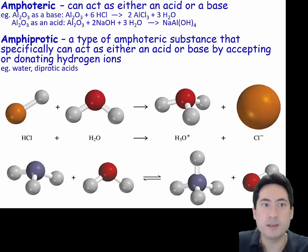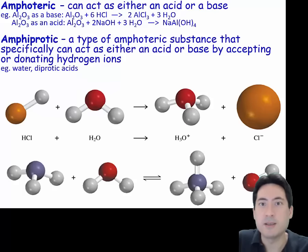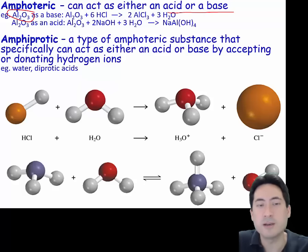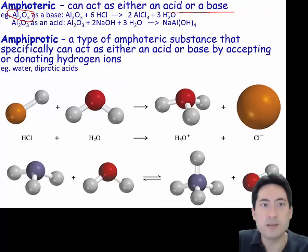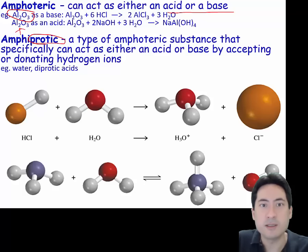This is called amphoteric — where a substance can act as either an acid or a base. A good example to know is aluminium oxide, which represents the cut-off between metal oxides in water that form bases and non-metal oxides in water that form acids, sitting smack in the middle. Specifically with protons, the release or acceptance is called amphiprotic, and a type of amphoteric substance is an amphiprotic substance — like water.